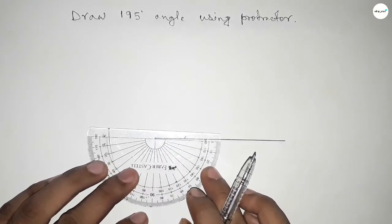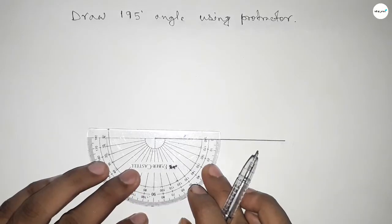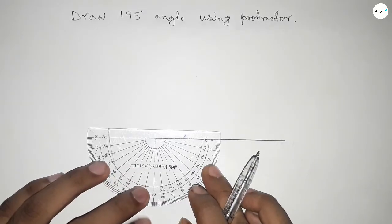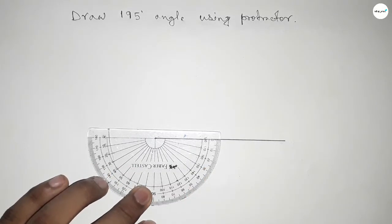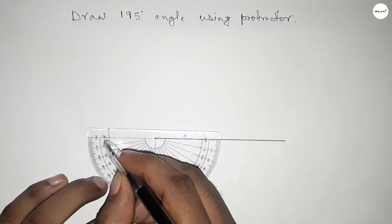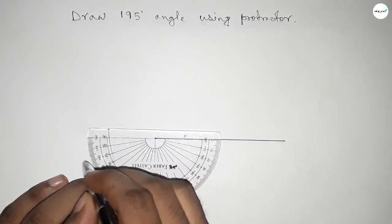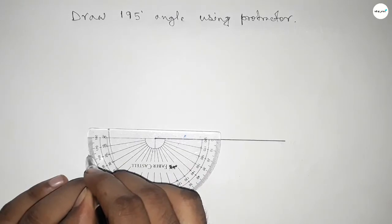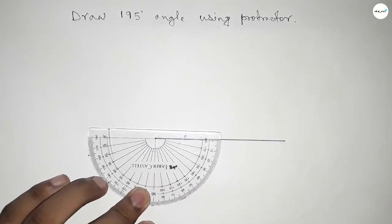So we have to add 15 degrees with 180 degrees. Putting the protractor by this way and counting here: 0, 10, and 20. Between 10 to 20 we can get 15 degree angle. So this is 15 degrees.